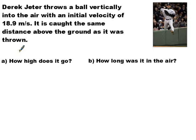Derek Jeter throws a ball vertically into the air, initial velocity of 18.9 meters per second. There's your initial velocity for this problem. It's caught at the same distance above the ground at which it was thrown, which means he didn't drop it and didn't land on the ground. Jeter doesn't do that, he catches it every time. Now, how high did the ball go, how long was it in the air?